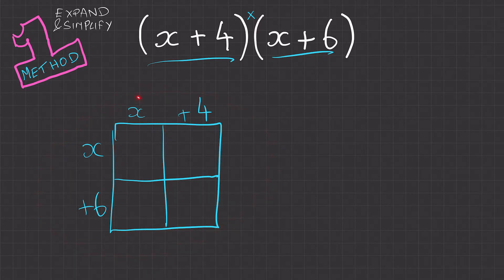Firstly I'm going to do x multiplied by x which equals x squared. Next I'm going to do 4 multiplied by x which equals 4x. Then I'm going to do x multiplied by 6 which equals 6x. And finally I'm going to multiply 4 and 6 together to get plus 24.